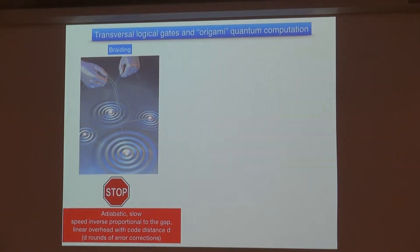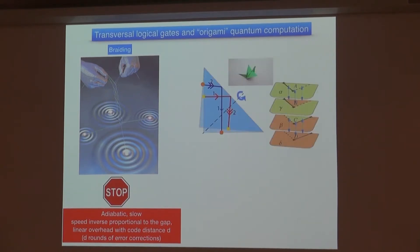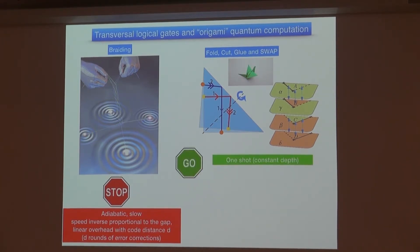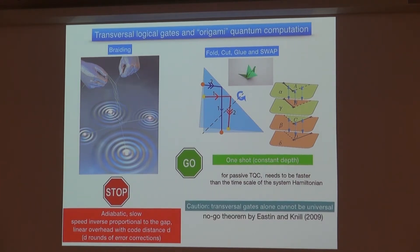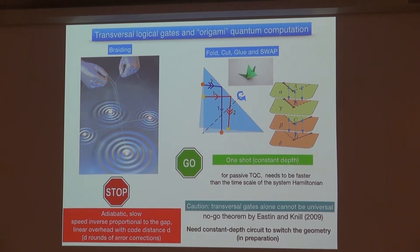We call this origami quantum computation. You fold the manifold, introduce cuts, get branch cuts, glue some edges to create gapped boundaries, and finally just do swaps. The advantage is that it's a single shot with constant depth. Compared to traditional adiabatic braiding—which is slow, inversely proportional to the gap size, and has linear overhead with the code distance—our scheme has constant depth. There is a caution: transversal gates alone cannot be universal due to the Eastin-Knill theorem. But we know some constant-depth circuits which switch the geometry between the square and the triangle, such that finally we have a constant-depth circuit.